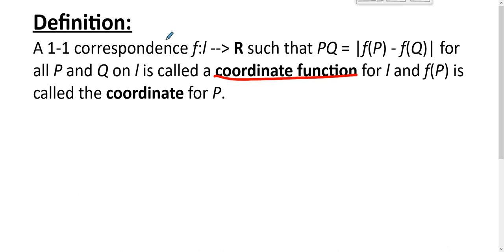It's a one-to-one correspondence, a bijection, call it f from the set of points on a line l to the set of real numbers such that the distance from P to Q, where P and Q are on line l, is the absolute value of f(P) minus f(Q).